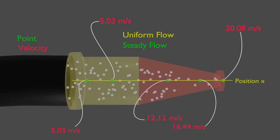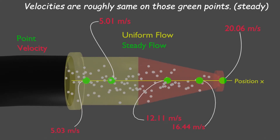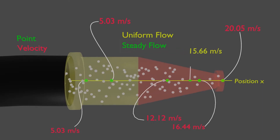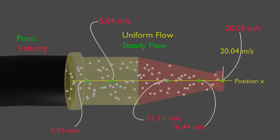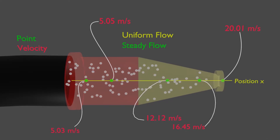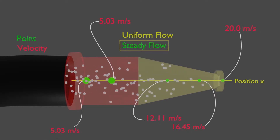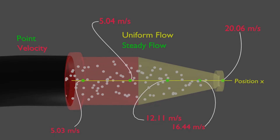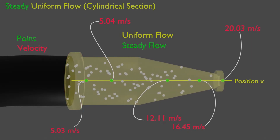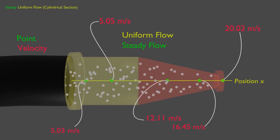Look at the converging section of the nozzle. Velocities are not changing at those fixed points — they stay the same quantitative value, which makes it steady flow. But it is changing from one position to the next, so it is not uniform flow. Now look at the cylindrical section. Velocity is also not changing at this point with time, so it is steady flow, and velocity is not changing from one position to another, so it is uniform flow. On the cylindrical section, water has steady uniform flow, but on the conical section, the flow is steady but not uniform.